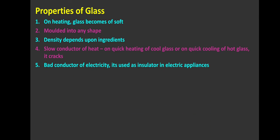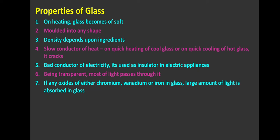Since it's a bad conductor of electricity, glass is used as insulator in electric appliances. Many electric appliances use glass - in induction, electric stove, gas stove at your place, you might have seen glass because it's a bad conductor of electricity. Being transparent, most light passes through it. We experience that daily. But if there are oxides of chromium, vanadium, or iron in the glass, large amounts of light are absorbed in the glass, so care must be taken.